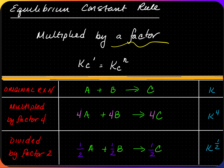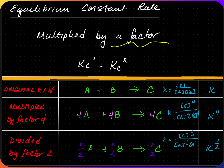When the equation is multiplied by a factor, that factor becomes the exponent of K. For the original equation A + B → C, Kc = [C]/([A][B]). If multiplied by a factor of 4, each species gets an exponent of 4, so Kc becomes K to the fourth power. If divided by 1/2, each exponent becomes 1/2, so the new K is K to the one-half power.